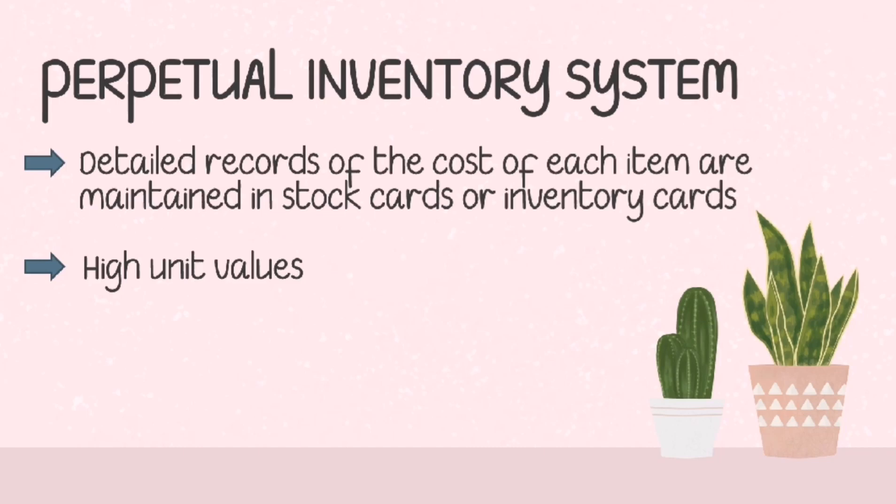Examples of businesses using the perpetual system are those selling cars and jewelry. Since there are stock cards, there is better control over inventories in the perpetual system compared to the periodic, because records always show the quantity that should be on hand. Any shortage in inventory is determined immediately, since these are high-value items.